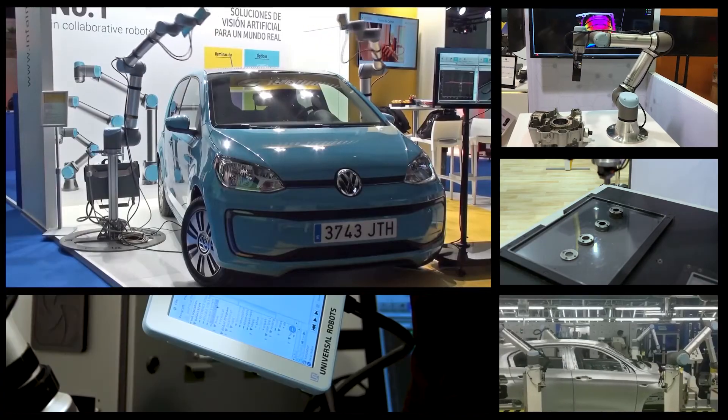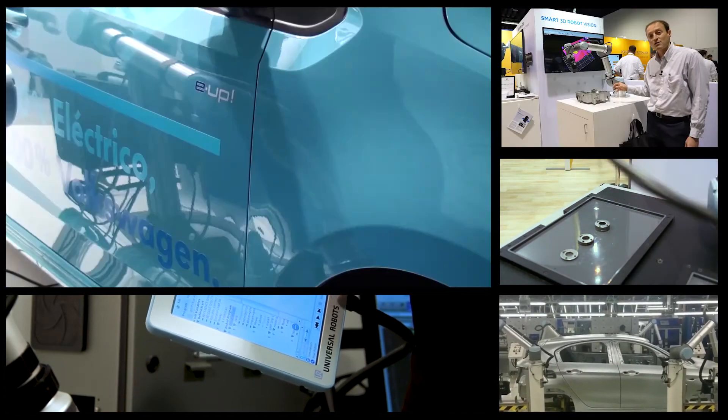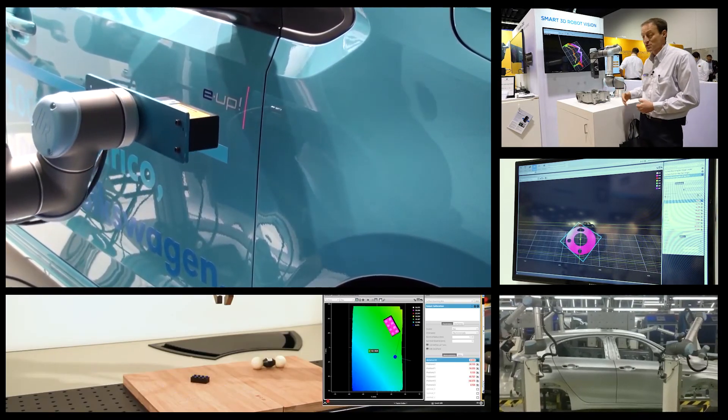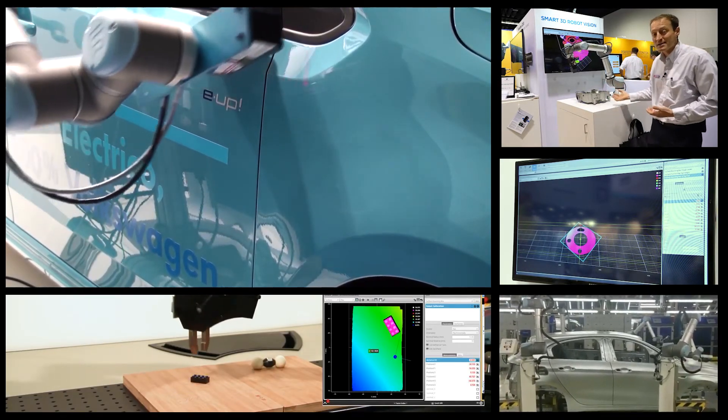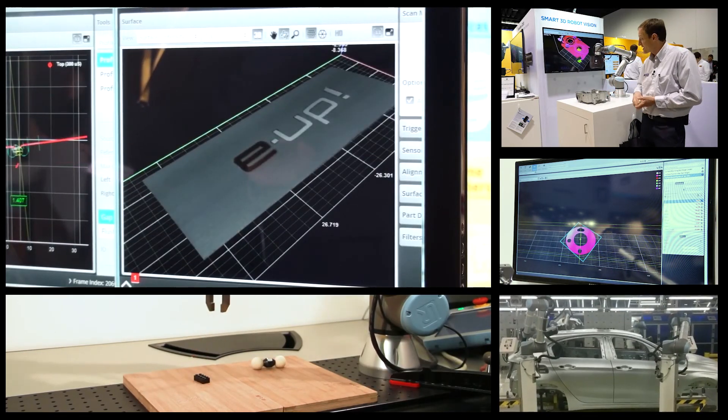Easy UR integration with GoCator 3D laser line profile sensors allows you to set up a complete vision-guided robotic solution up and running with minimal cost and development time. Try UR integration with GoCator 3D line profilers to improve your factory production.